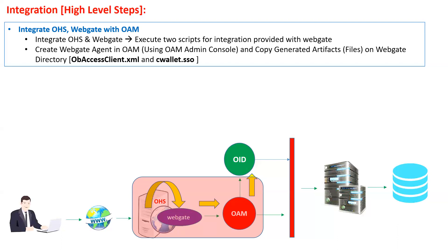To integrate WebGate and OHS with OAM, go to the OAM admin console and create an agent. Once you create the agent in OAM, it generates certain configuration files. You take those files and copy them into your WebGate configuration directory — that is all that is required for the OHS, WebGate, and OAM integration. The two important files you must copy are ob-access-client.xml and cwallet.sso.